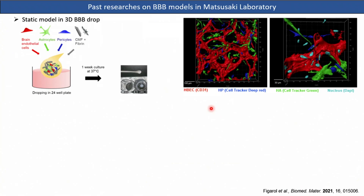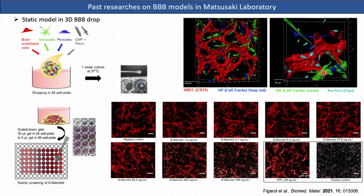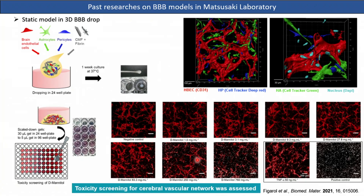I would like to give an overview of what we've done in our laboratory regarding BBB modeling. We already developed a static model composed of the three BBB cells embedded in a collagen type 1 and fibrin gel mix. After seven days of culture, they form a self-organized structure with an endothelial cell network in close proximity to astrocytes and pericytes. We also scaled this down to fit into a 96-well plate, and as a proof of concept, assessed the toxicity of different concentrations of D-mannitol, showing this model could be useful for toxicity assessment of the vascular network.